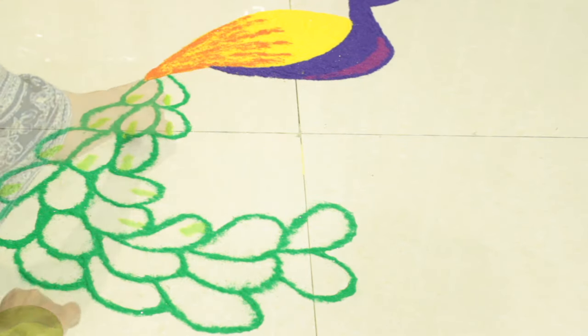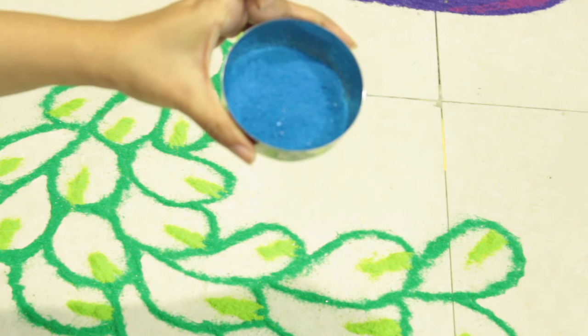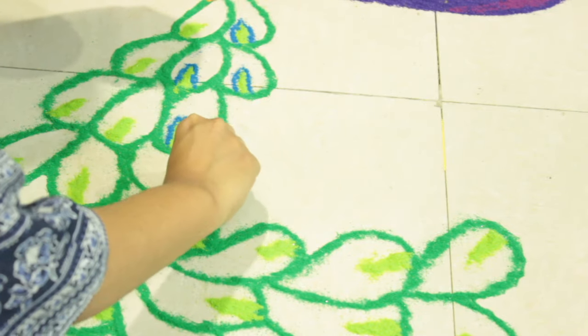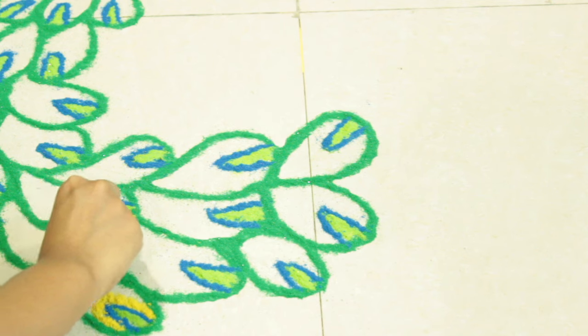Now take a shade of bright blue like this and start drawing outline around those light green lines that we had made. Leave some of the feathers as they are, as we'll be placing diyas in these. In the rest, fill some yellow color like this.